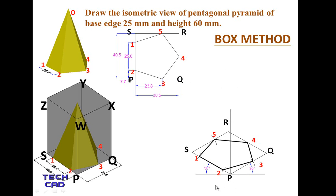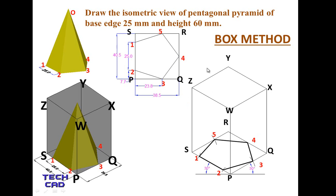Now take the heights. The height of the solid is also the height of the box. Draw PW, QX, and SZ as vertical edges. Joining these completes the box with top face WXYZ.